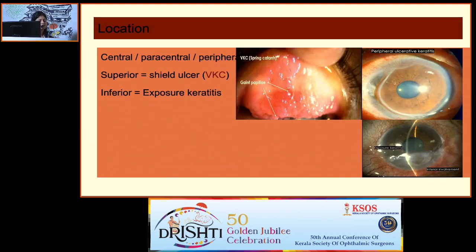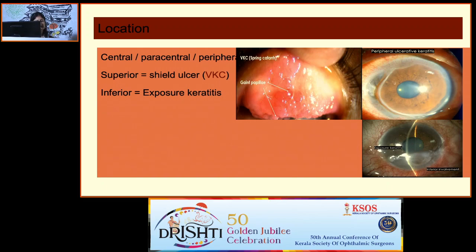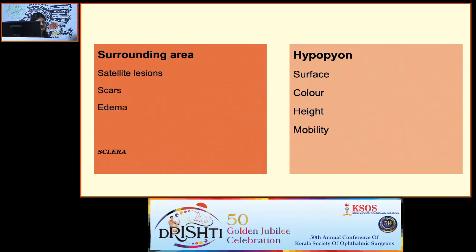Location gives a clue: superior location suggests a shield ulcer; inferior suggests exposure keratitis. Mention whether the ulcer is central, paracentral, or peripheral. Shape is also important — dendritic ulcer suggests viral etiology; ring ulcer suggests acanthamoeba. Examine margins carefully: well-defined margins suggest healing; ill-defined suggests active infection; feathery margins suggest fungal; punched-out margins suggest neurotrophic; overhanging margins suggest Mooren's ulcer. Look at surrounding area for satellite lesions, scars, and edema. For hypopyon, mention the surface, color, height, and mobility.